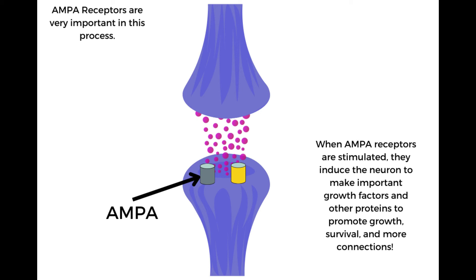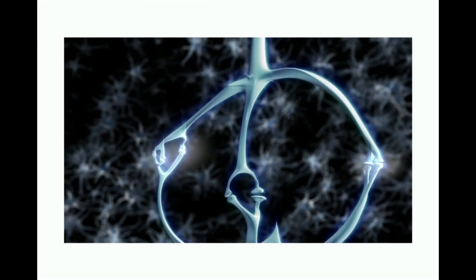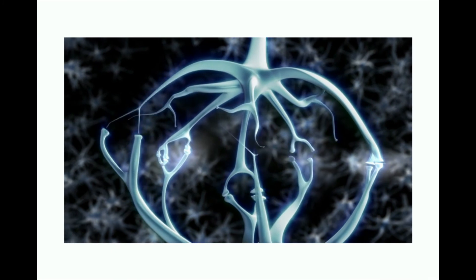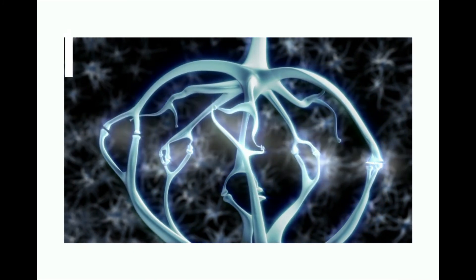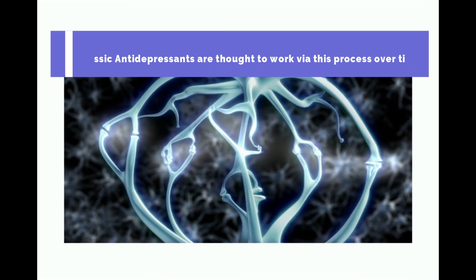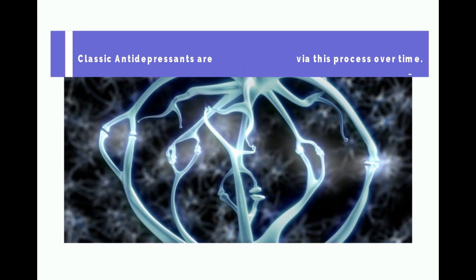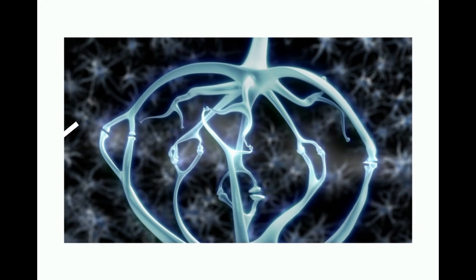When AMPA receptors are stimulated, they induce the neuron to make important growth factors and other proteins to promote growth, survival, and more connections. As you can see here, these two neurons are making more connections with each other. This is how classic antidepressants are thought to work. But what about ketamine?